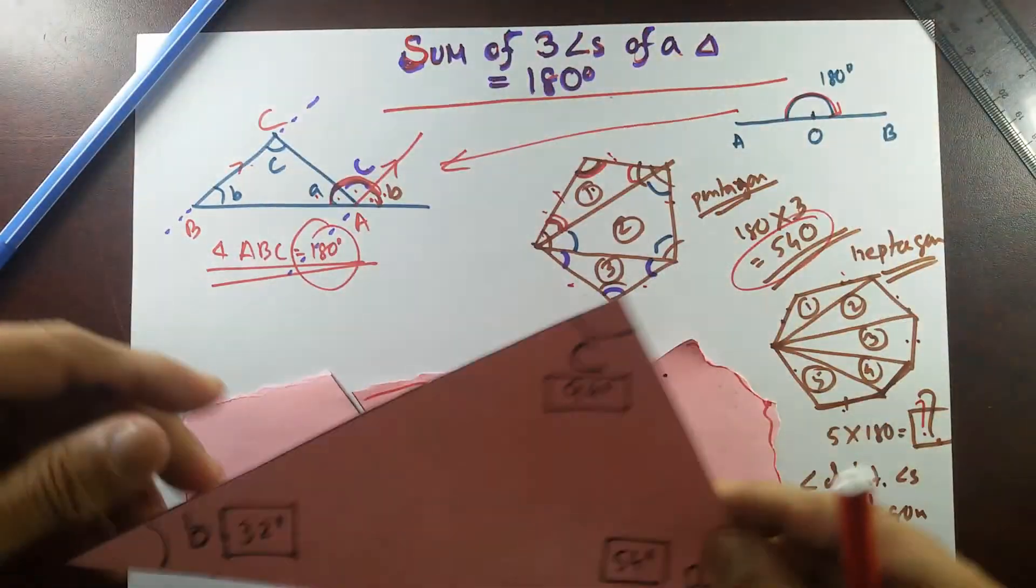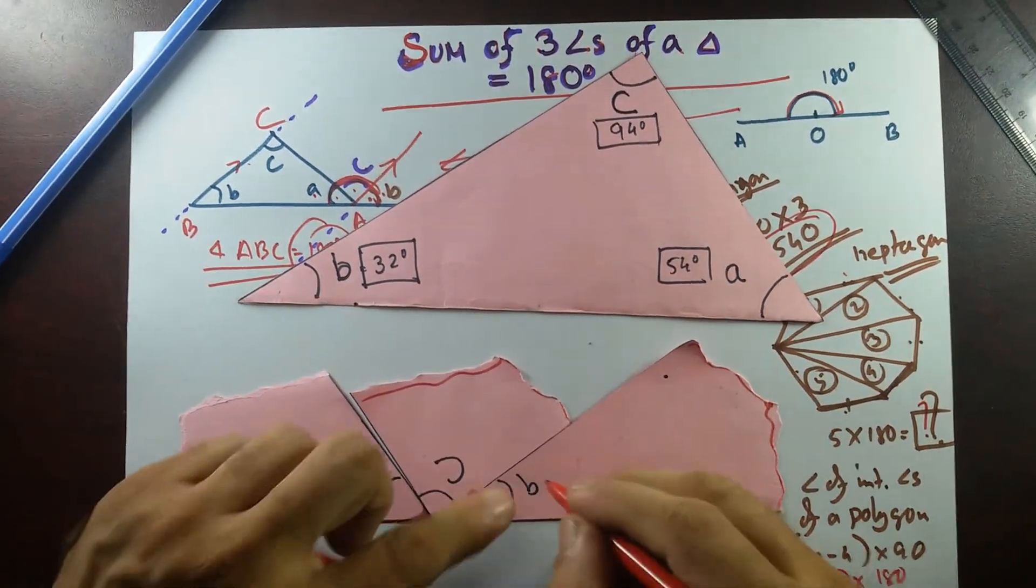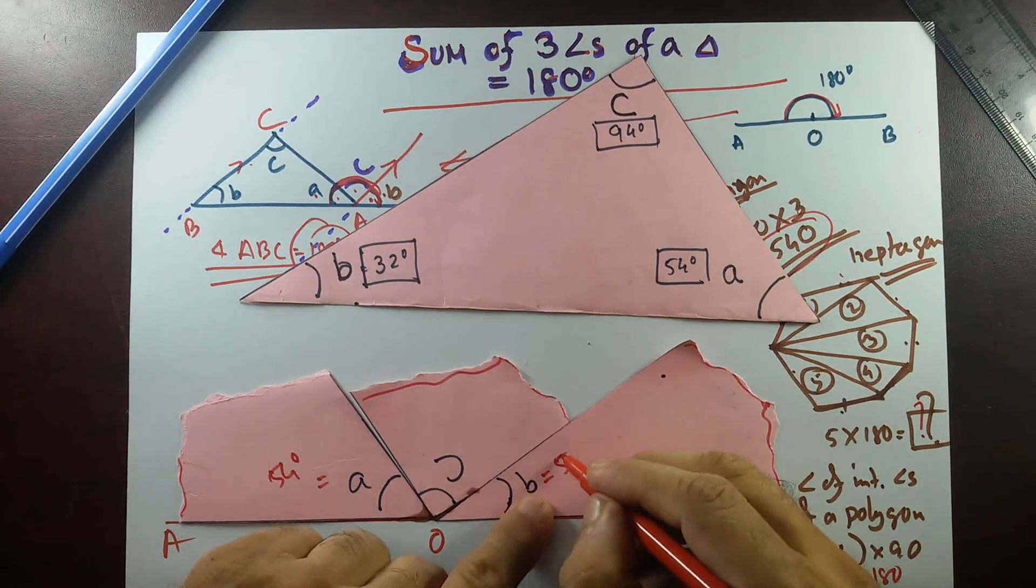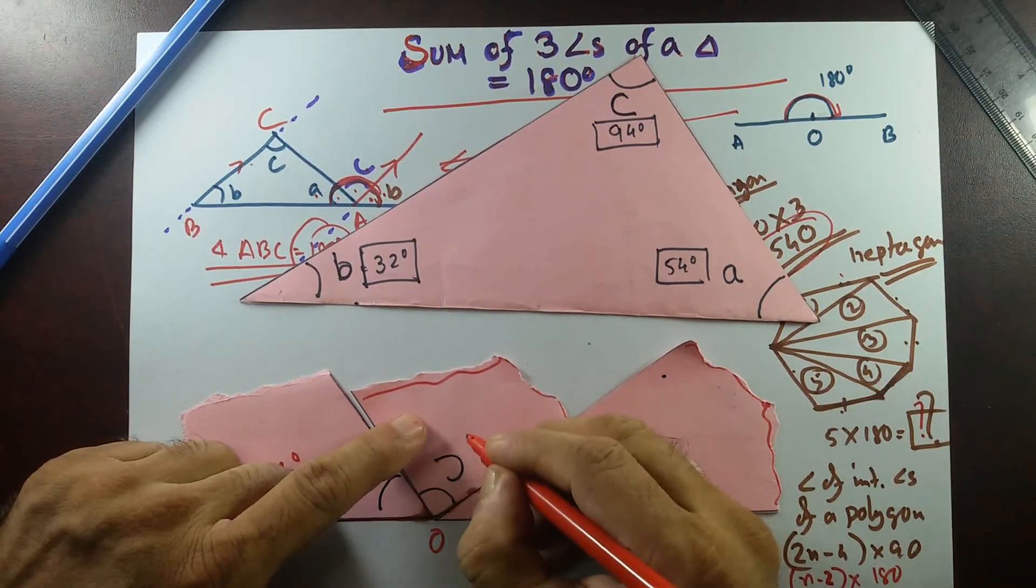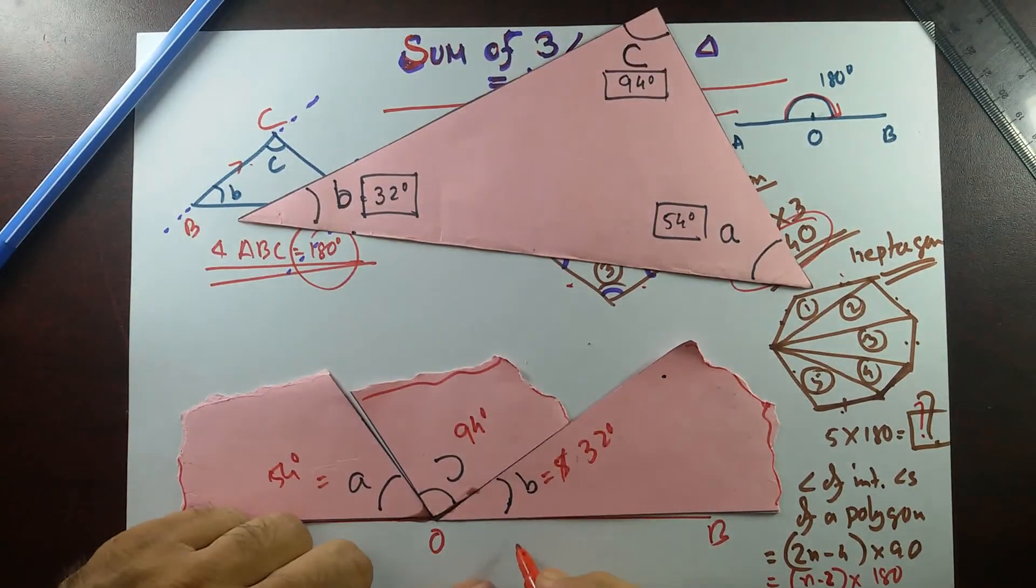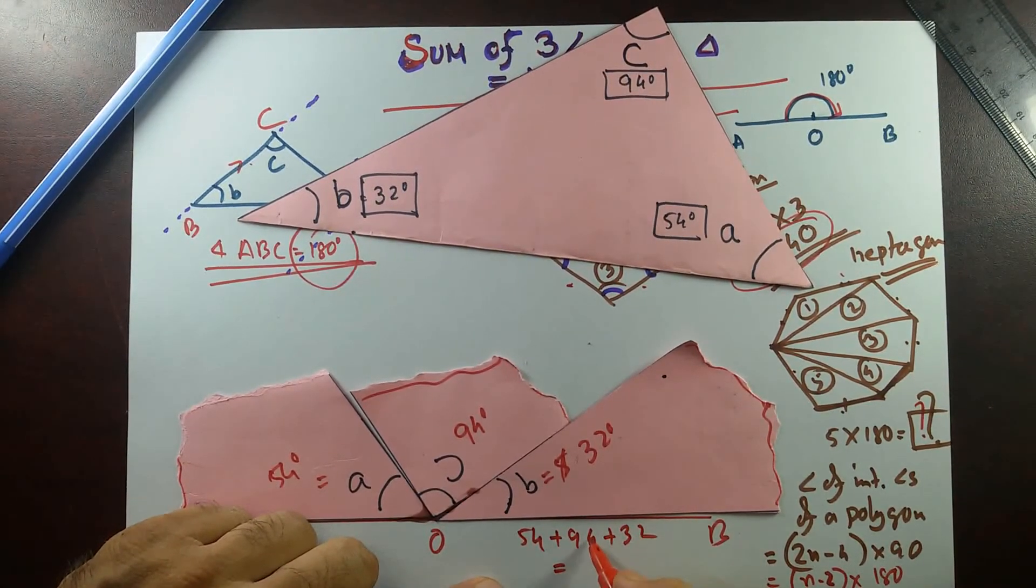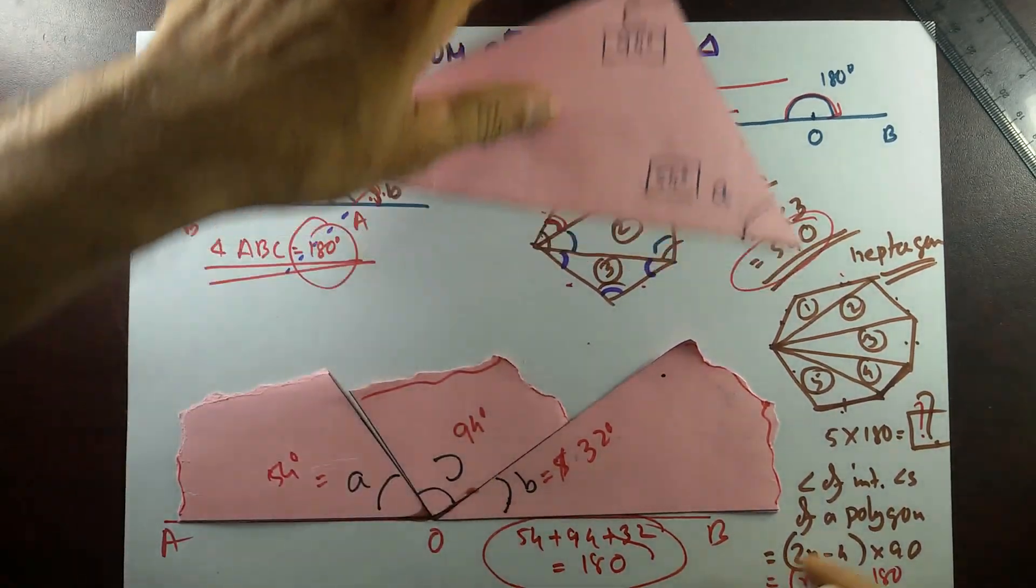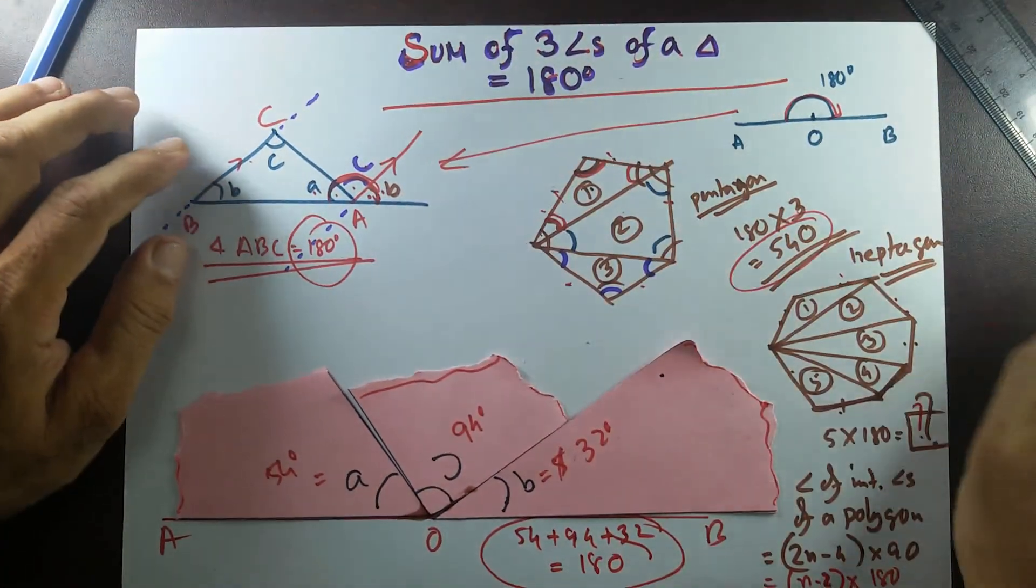I'll just bring this one. When I measured that, angle A was 54 degrees, B was 32 degrees, and C I measured with the protractor, it was 94 degrees. So if you add that, 54 plus 94 plus 32, you're going to get 180. So that's what it is. By measuring or by calculating or like that, you can see that sum of 3 angles of a triangle equal to 180 degrees.